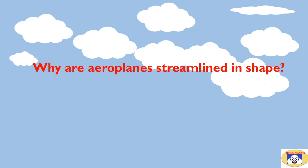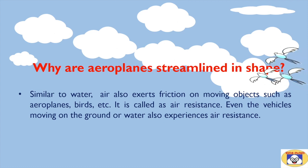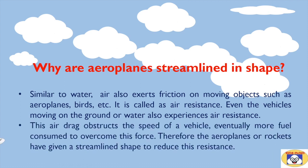Have you ever thought why aeroplanes are streamlined in shape? Similar to water, air also exerts friction on moving objects such as aeroplanes and birds — this is called air resistance. Vehicles moving on the ground or water also experience air resistance. This air drag obstructs the speed of a vehicle, and more fuel is consumed to overcome it. Therefore, aeroplanes and rockets are given a streamlined shape to reduce this resistance.